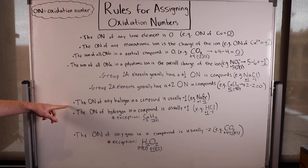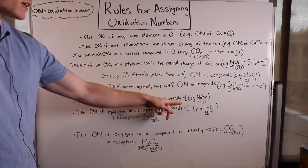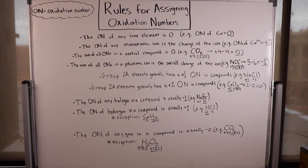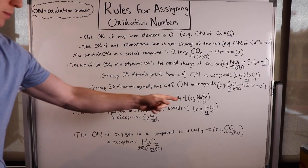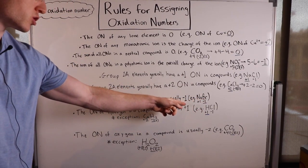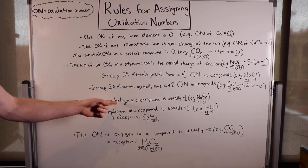The oxidation number of any halogen in a compound is usually negative one. Halogens are group 7A elements and include things like chlorine, bromine, and iodine. Here, bromine has a negative one oxidation number in sodium bromide, and it's a halogen.